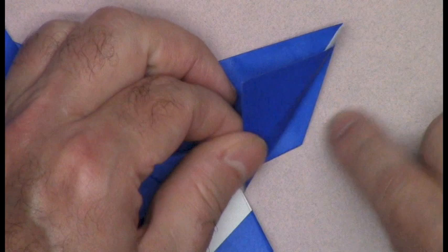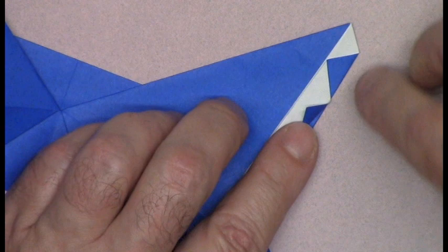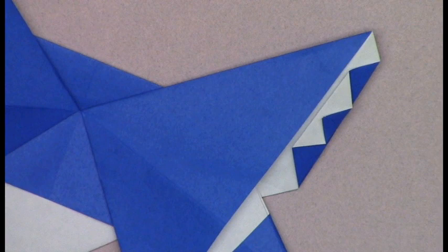Between this raw edge and this hidden corner, fan fold or pleat the triangle flap into thirds, producing alternating colored and white triangles. Repeat on the other side.